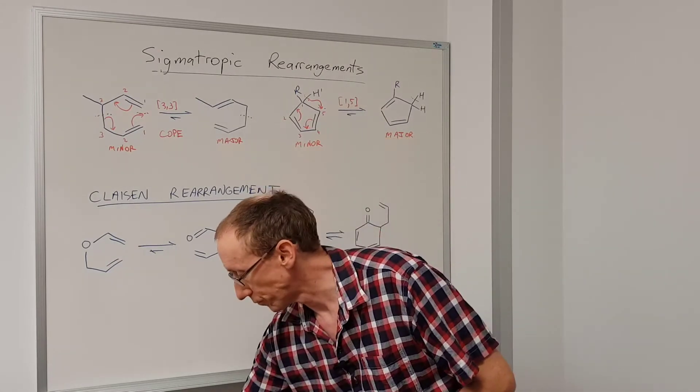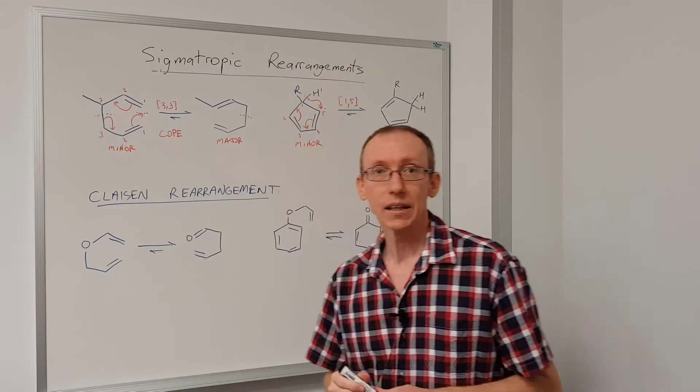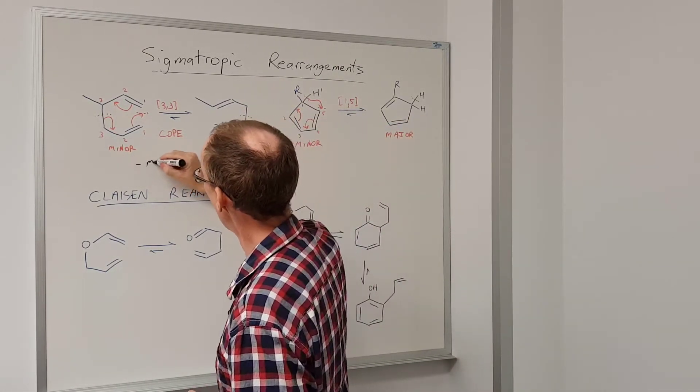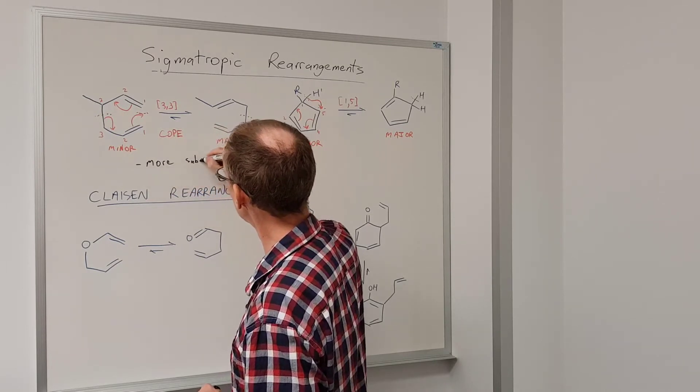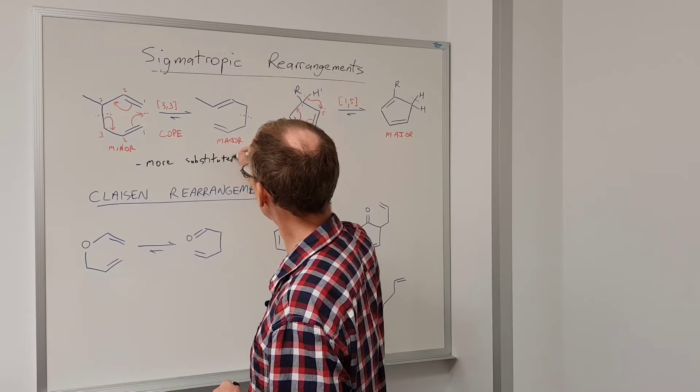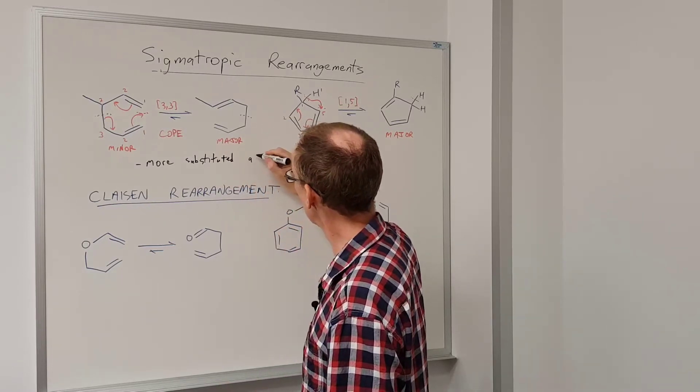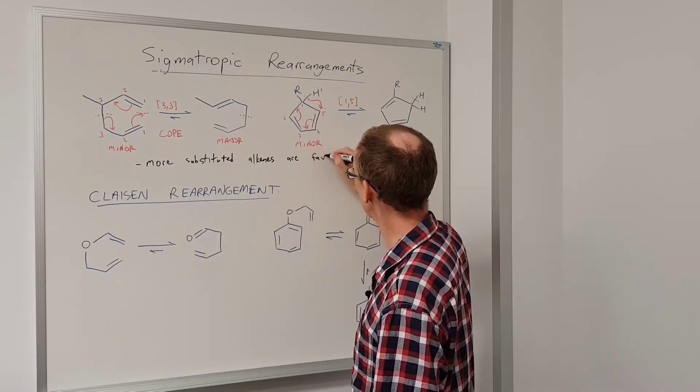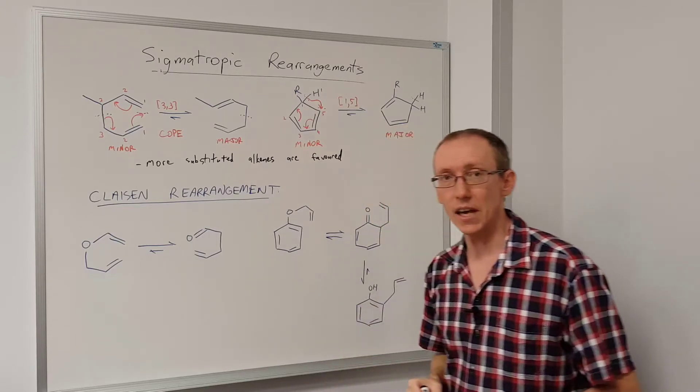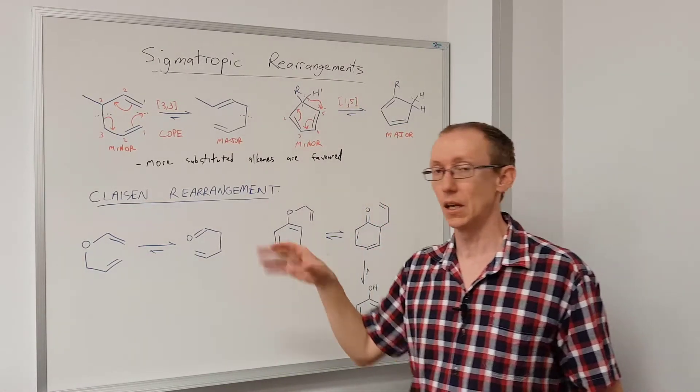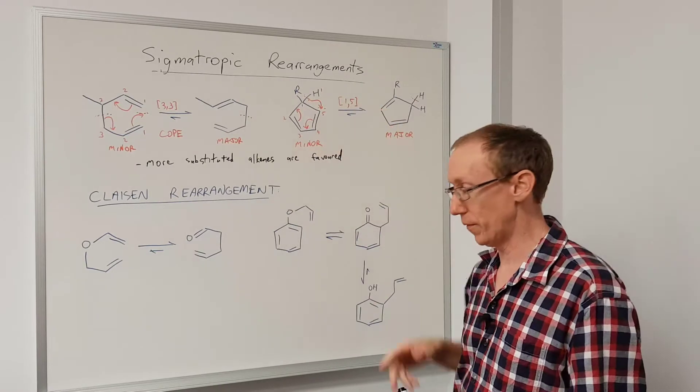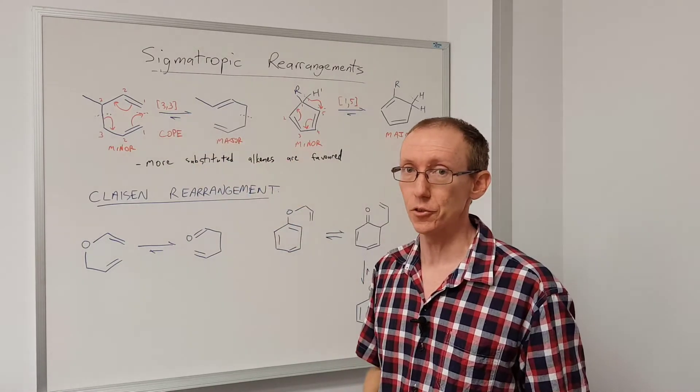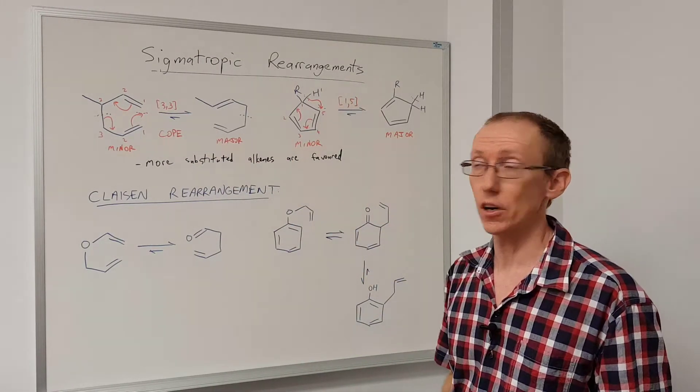An overall key concept among these sorts of rearrangements is that the more substituted alkenes are favored, and so we can use that general rule to predict which side the equilibrium will be favored. So that's the Cope rearrangement, which is a 3,3 sigmatropic rearrangement, and a 1,5 hydride shift.